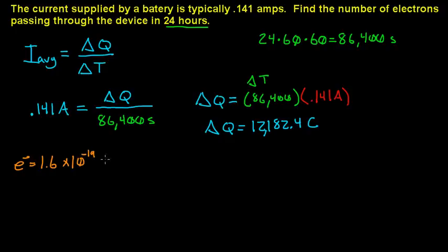So all you have to do is rearrange this to say you've got 12,182.4 coulombs. Remember, a coulomb is equal to the amperage times second.